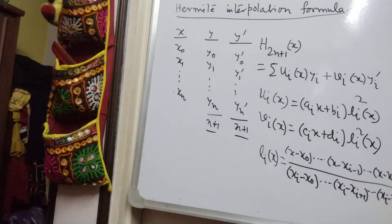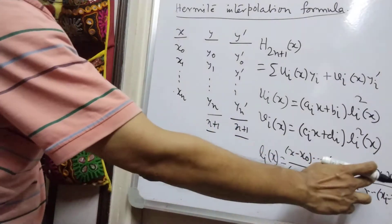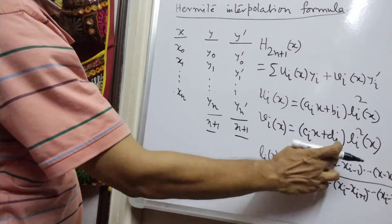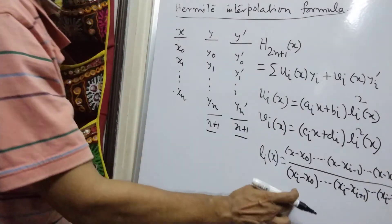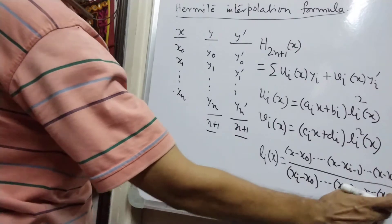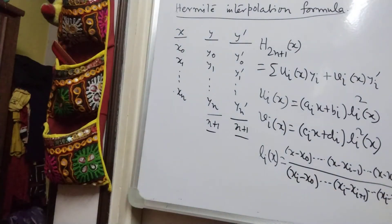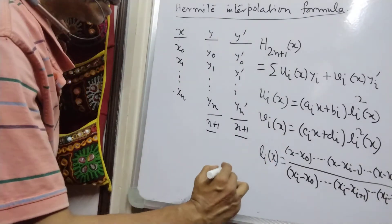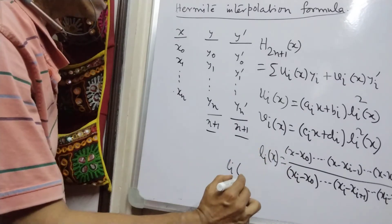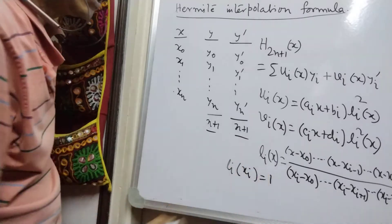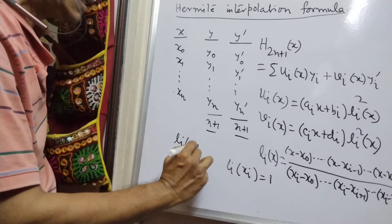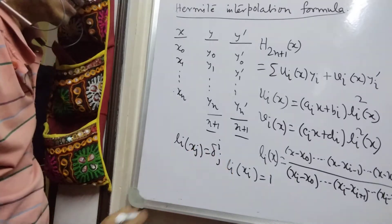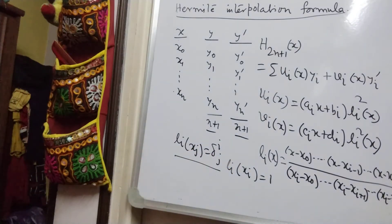This is a polynomial of degree n because we have skipped (x - x_i) in the numerator, and the term (x_i - x_i) is skipped in the denominator to avoid zero. Using this definition, l_i(x_i) = 1, and more generally l_i(x_j) = δ_{ij}, the Kronecker delta. This is the vital property of l_i(x) that will be used throughout.